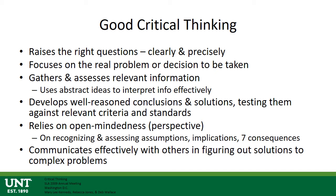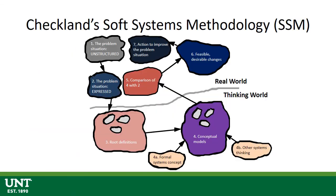Good critical thinking relies on open-mindedness — that's perspective, which we just talked about. And it means communicating effectively with others in figuring out solutions to complex problems. Not only do we have to clearly understand the problem, but we have to figure out how to clearly articulate the problem so that people can understand it. This process is cyclical — I can start at step 1, move through to step 7, and go back to step 1 again, continuing to adjust and refine and get better as I move through it.